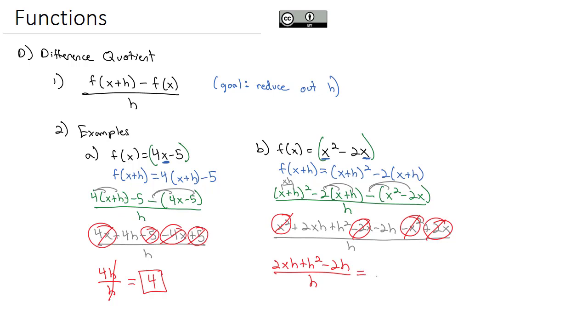But remember, we're only allowed to reduce if we first factor the expression. So I can't reduce out the h unless I first factor an h out of each term, leaving behind 2x plus h minus 2 all over h. Now I can reduce out the h. That's always our goal, which leaves us with 2x plus h minus 2 for our final difference quotient.